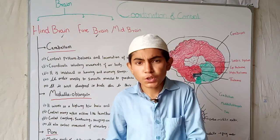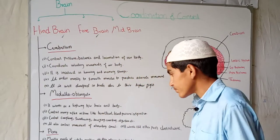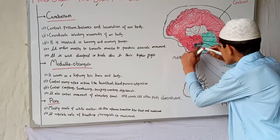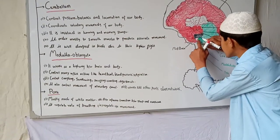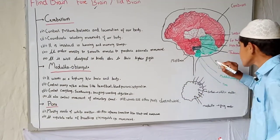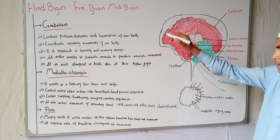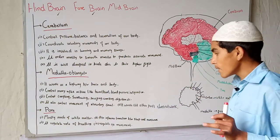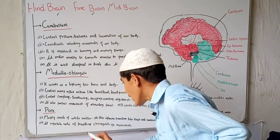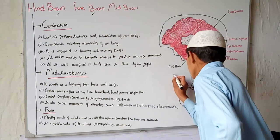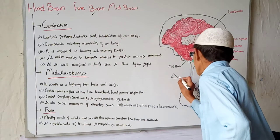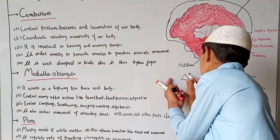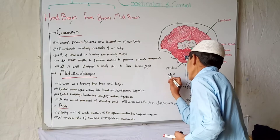The third part of the hindbrain is the pons. You can see this bridge-like structure here — this portion is our pons. It is mostly made of white matter because its neurons consist mainly of axons.